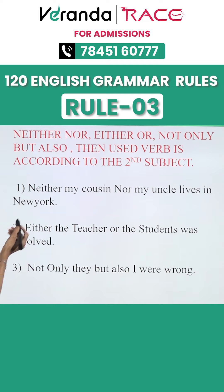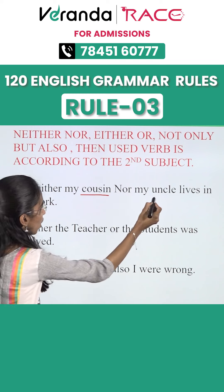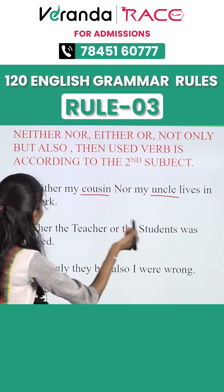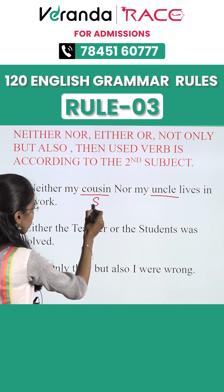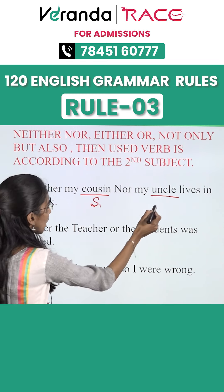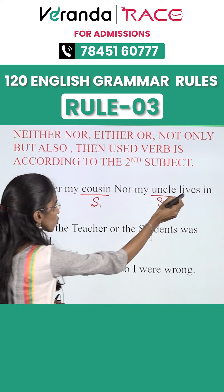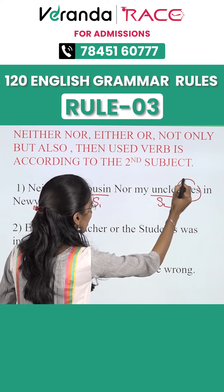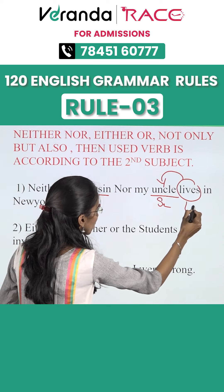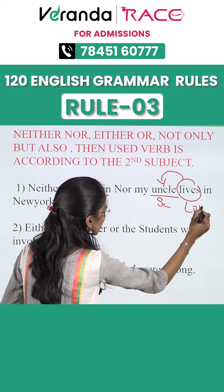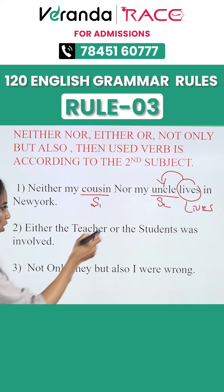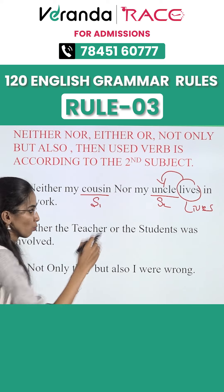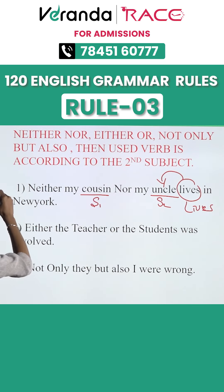For example: neither my cousin nor my uncle lives in a niwak. Cousin is subject 1 and uncle is subject 2. So the verb should be according to subject 2. Here we are using 'lives'. Uncle is a singular noun, so the verb is also singular. This is the correct sentence formation.